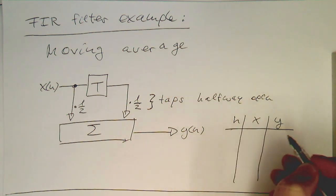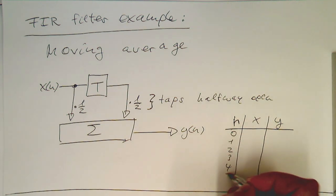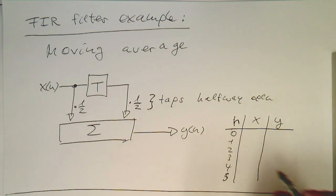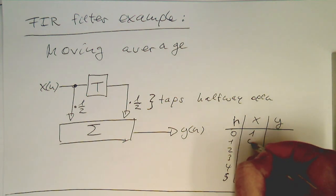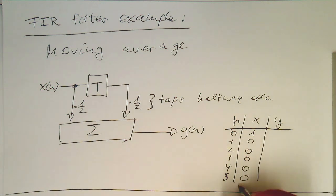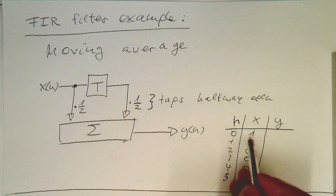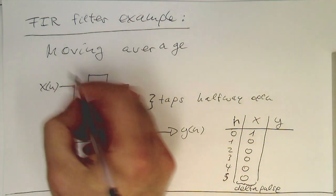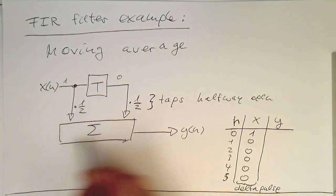Let's look at how this system acts on a delta pulse — time steps 0, 1, 2, 3, 4, 5. A delta pulse is just 1 at time zero and then 0 for the rest. So the 1 here is directly showing up at the output. At the first time step we get the 1, and since the delayed value is still 0, this gives us just a half.